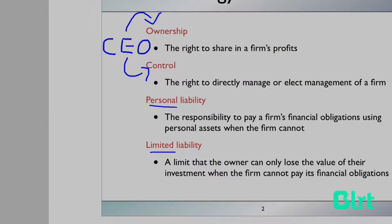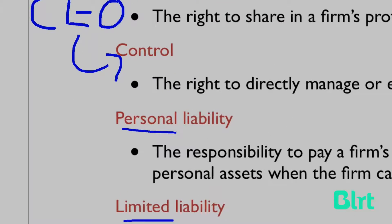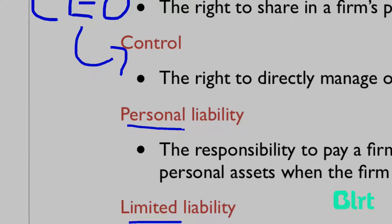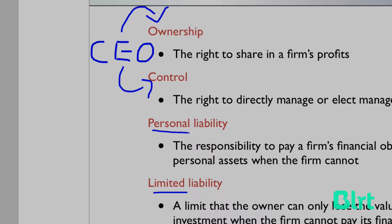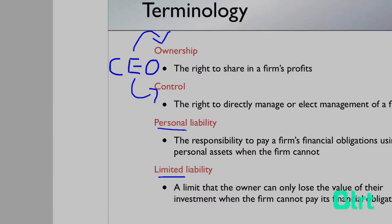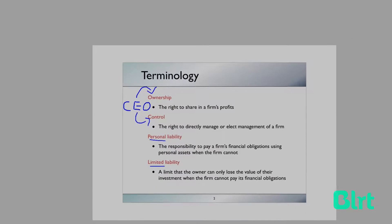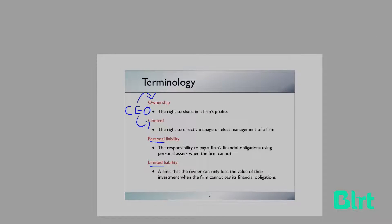On the other hand, let's say there's a small business owner who runs their own cafe. They would have personal liability. If they were to go bankrupt, they may need to sell their car or their house in order to meet their financial commitments and obligations if they don't have the funds readily available.